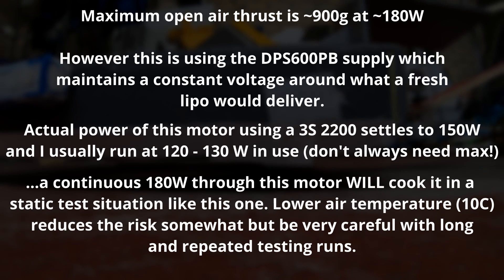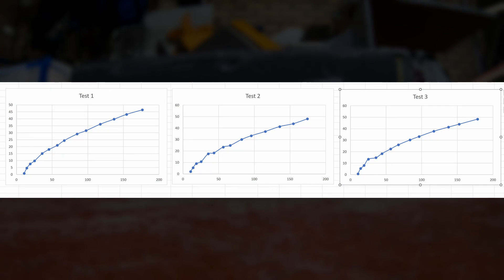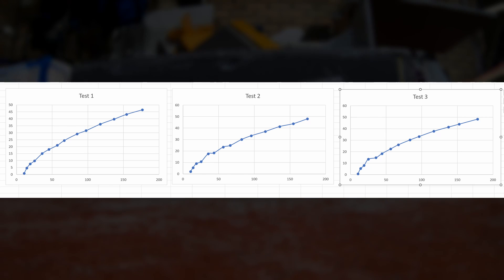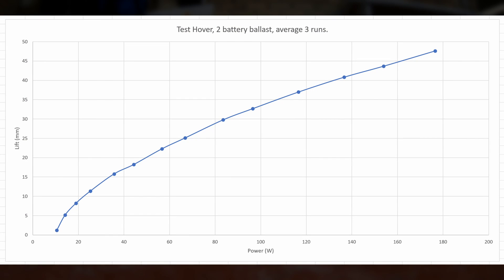I done my three testing runs and averaged the results. You can see if one test is maybe slightly off — maybe the sensor had a slightly bad reading or there was a vibration or something. If you average them out, surprisingly you get quite a nice curve out of it.